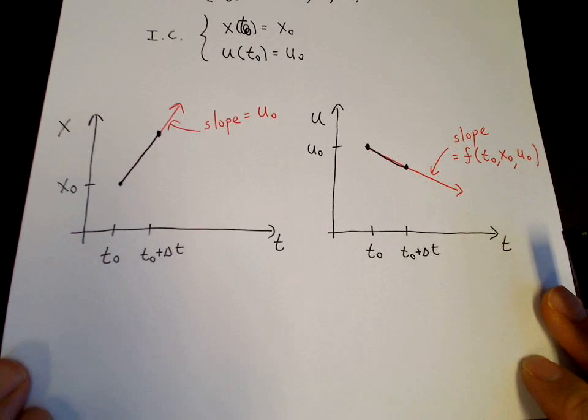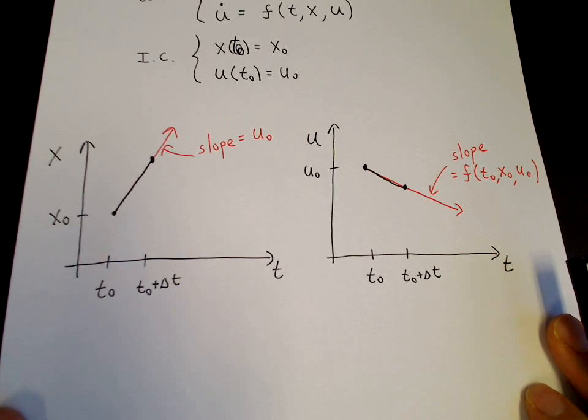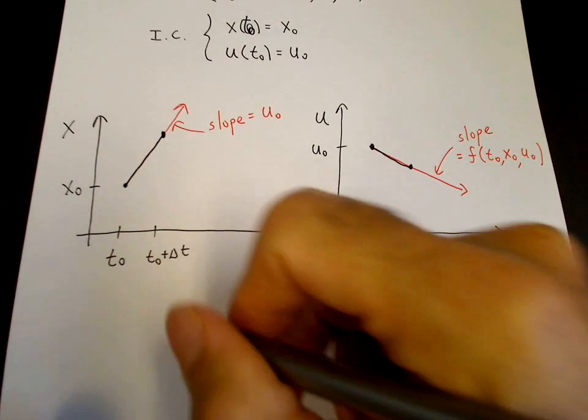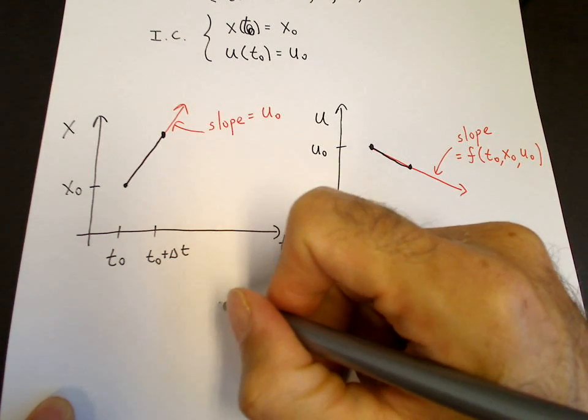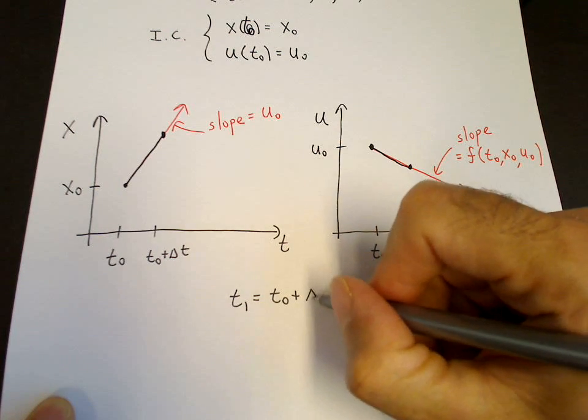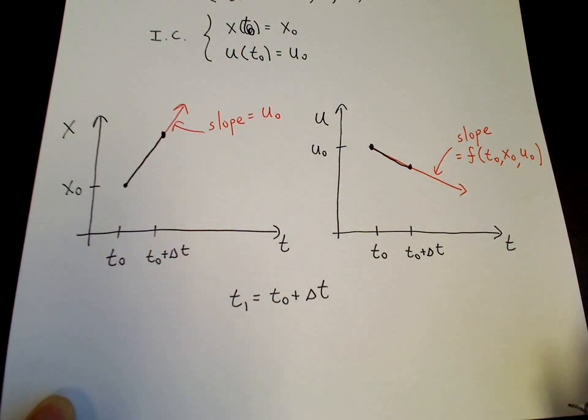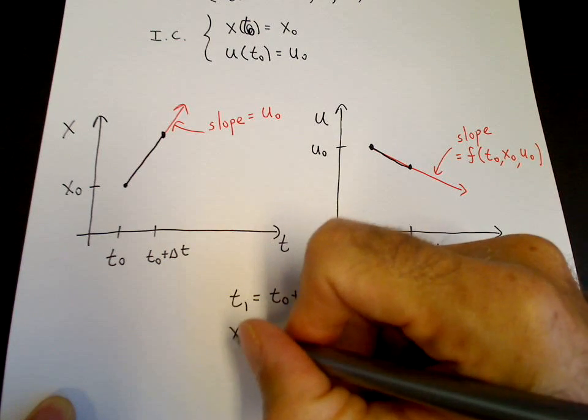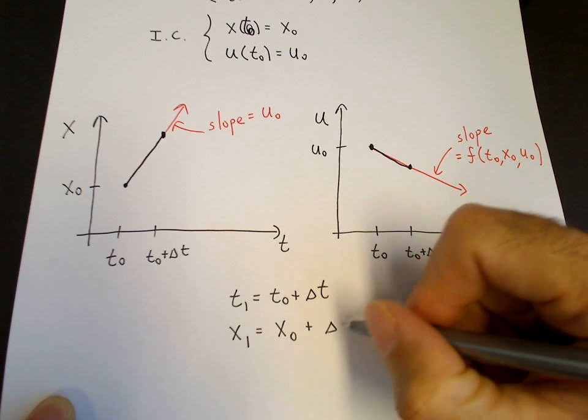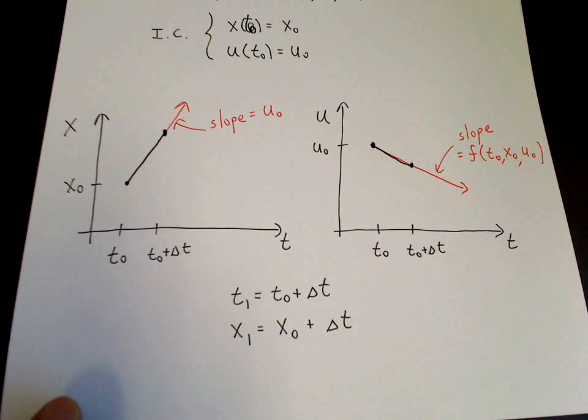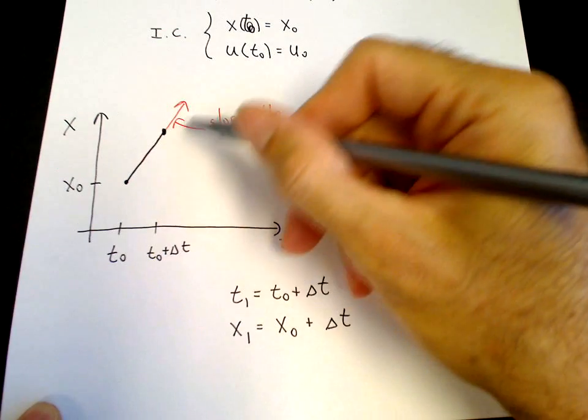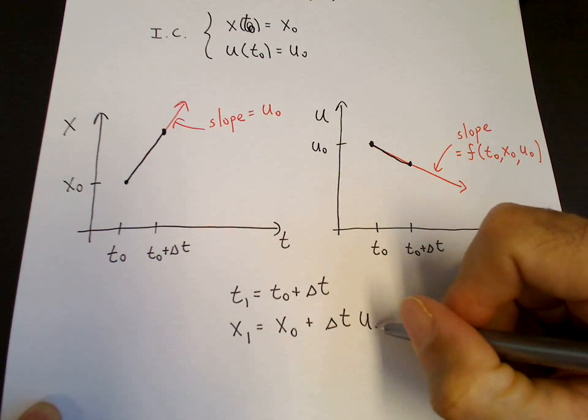So we get an iteration equation which I can write down at least to the first time step. So we have t1 is equal to t naught plus delta t. x1 is equal to x naught plus delta t times delta x over delta t, so that's the slope, u naught.